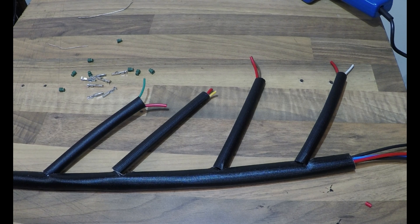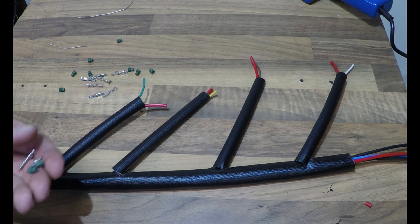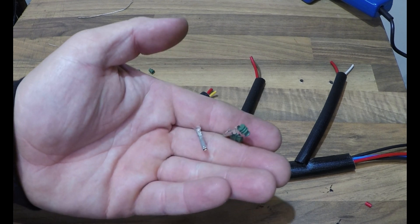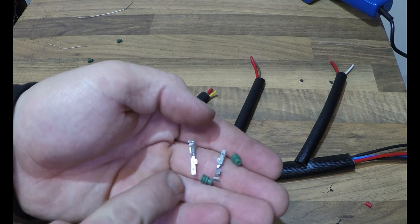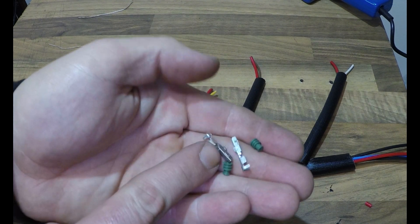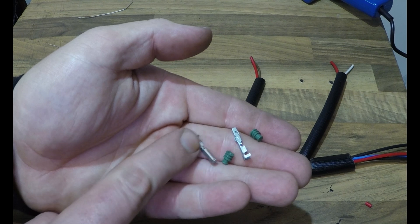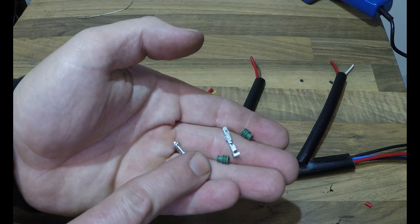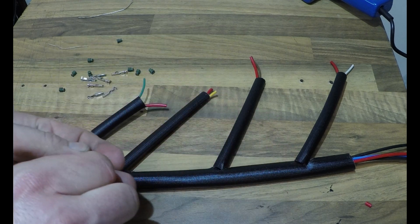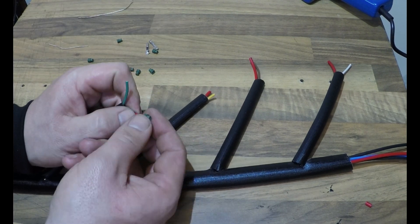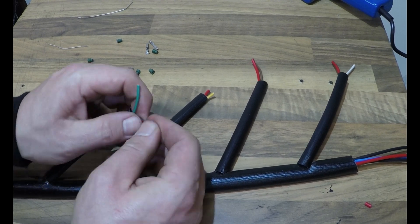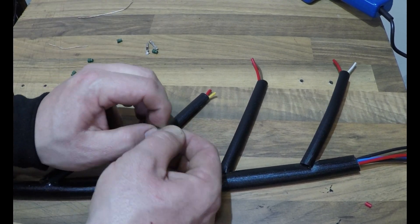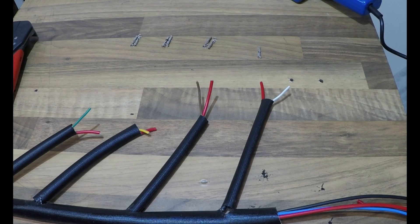Now I'm ready to terminate the ends to put the plug on that is supplied with the injector dynamics injectors. In that packet you also get the waterproof rubber seal for the plug and the uninsulated connectors themselves. We're going to start off with the waterproof connectors. I'm going to put those on before I even strip the end of the wires.